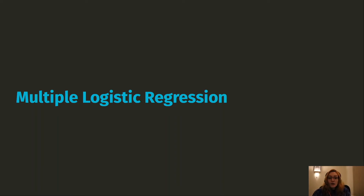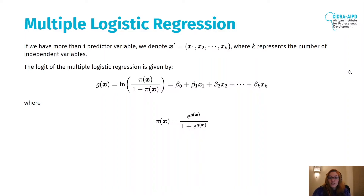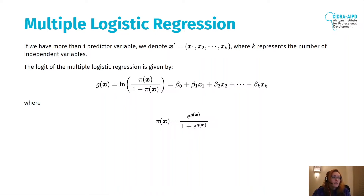So far we've seen how to do logistic regression using only one predictor variable. Most of the time when solving a problem, we need to use more than one variable. For that, we use what is called multiple logistic regression. It follows the same process as the binary logistic regression, but now we have more independent variables. The model is beta zero plus beta one x one plus beta two x two plus beta three x three up to beta n x n.